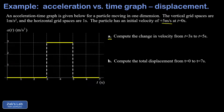In part A we're asked to compute the change in velocity during the acceleration phase where the acceleration is three meters per second squared. In part B we're asked to compute the total displacement for the entire process — that's the tricky part. For part A, I want the change in velocity from t equals three to t equals five seconds. This is just the area bounded by the acceleration-time graph. The bounded area has a height of three meters per second squared.